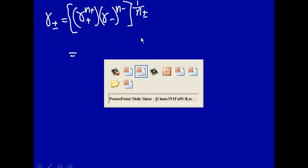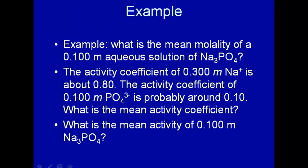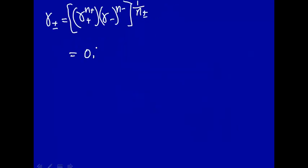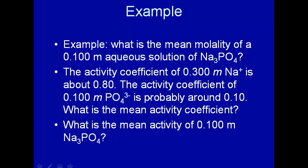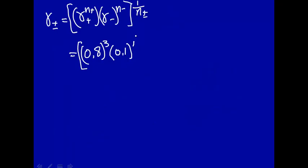The problem gives the activity coefficient for the plus as 0.8. Sodium has to be raised to the third power. That's what N plus is. Phosphate, the activity coefficient there, is about 0.1. That's raised to the first power, and this is the fourth, 1 over 4, fourth root. And this comes out to be 0.476. So the activity of the plus is 0.8, the minus is 0.1, and so the average activity coefficient considering both species is 0.476.